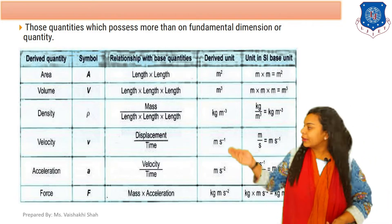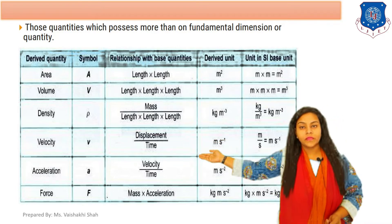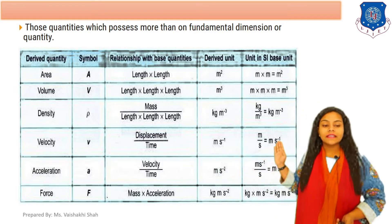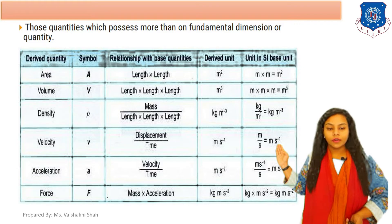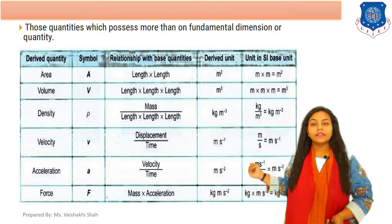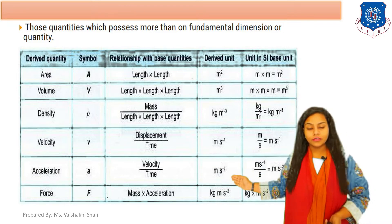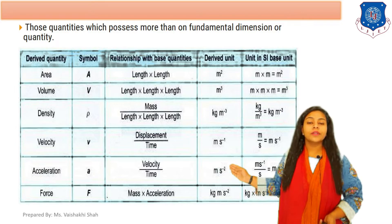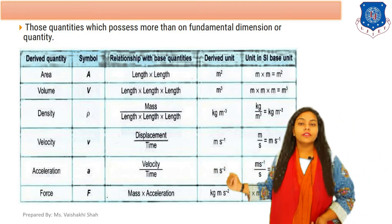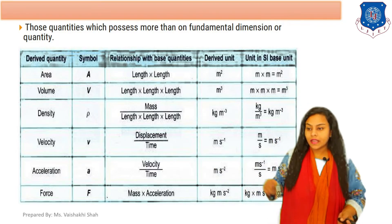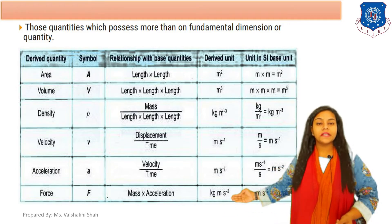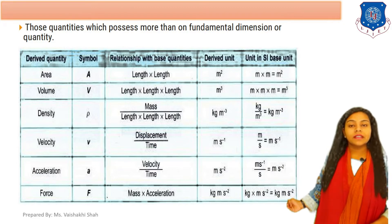The next quantity is velocity, indicated as V. The equation for velocity is displacement upon time — meter per second — written as L T raised to minus 1. Acceleration, indicated by A, is velocity by time, giving unit meter per second squared, written as L T raised to minus 2. Force, F equals M into A, mass into acceleration, so the unit is kg times meter per second squared, written as M L T raised to minus 2.